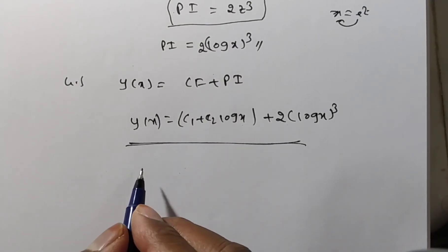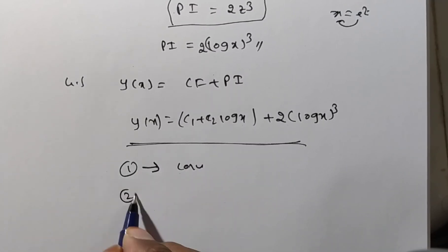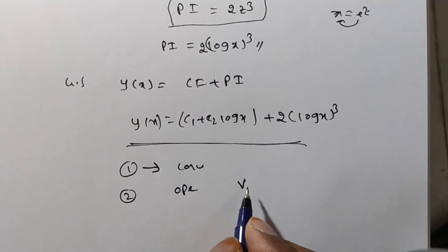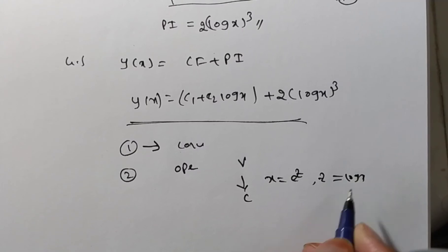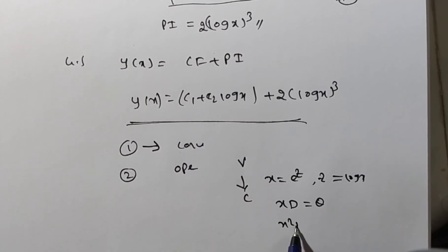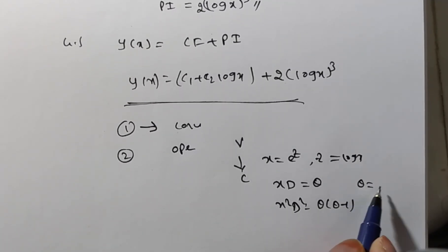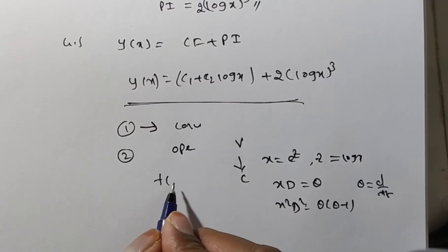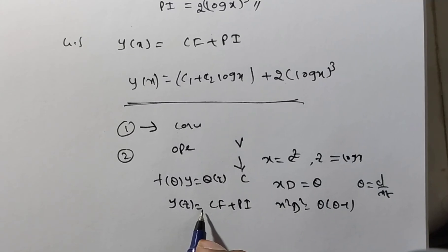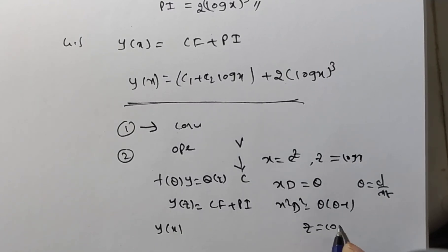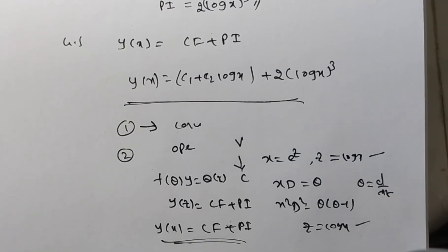To summarize: if the problem is not in standard form, first convert it. Then write in operator form. Since the equation has variable coefficients, substitute x = e^z (z = log x), replacing xD = θ and x²D² = θ(θ−1), where θ is the differential operator with respect to z. This gives f(θ)·y = Q(z). Find the complementary function and particular integral, then replace z by log x for the final solution in terms of x.